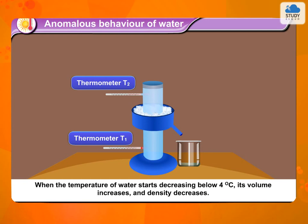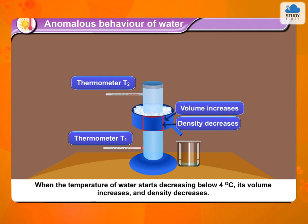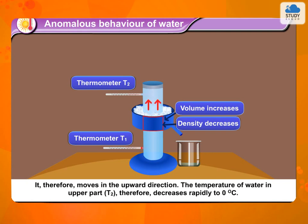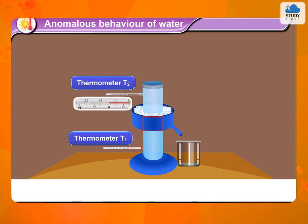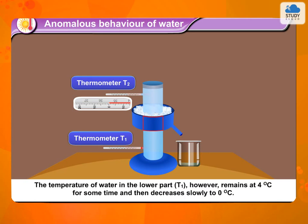When the temperature of water starts decreasing below 4 degree Celsius, its volume increases and density decreases. It therefore moves in the upward direction. The temperature of water in the upper part T2 therefore decreases rapidly to 0 degree Celsius, while the temperature of water in the lower part T1 remains at 4 degree Celsius for some time and then decreases slowly to 0 degree Celsius.